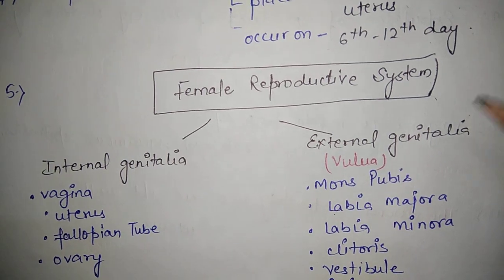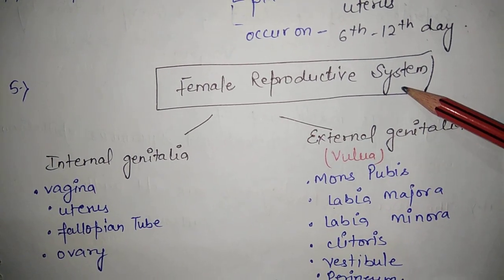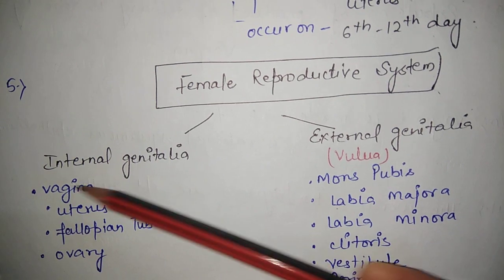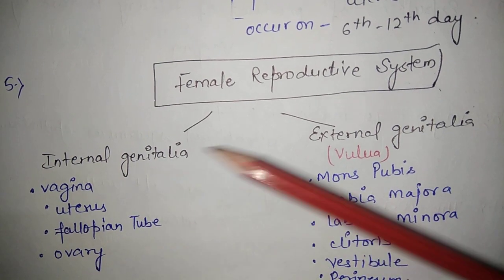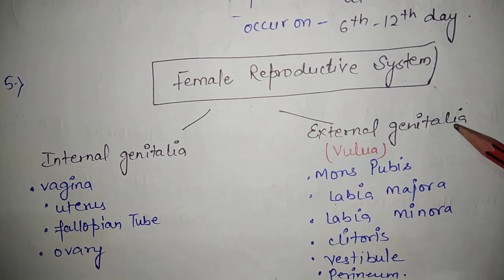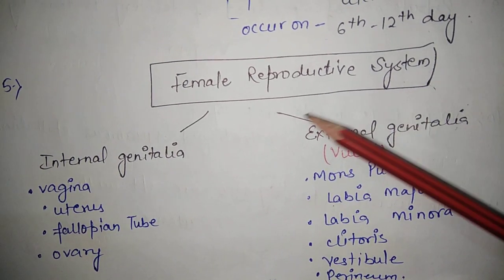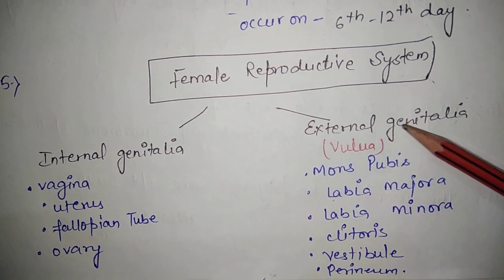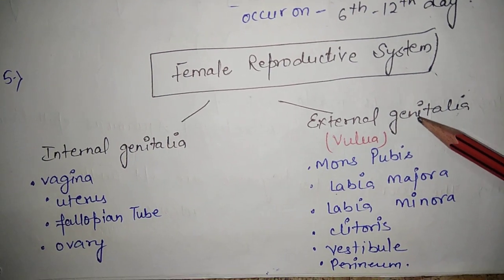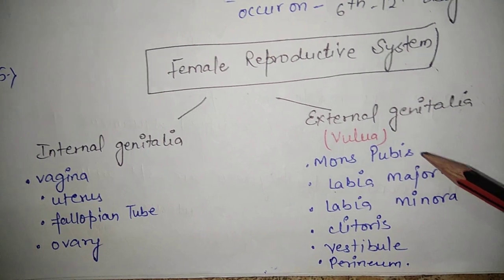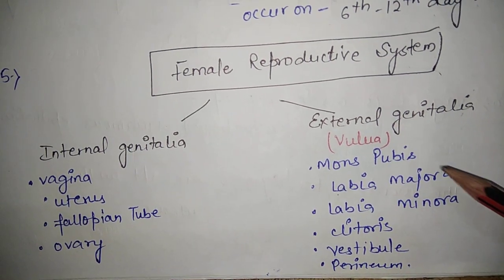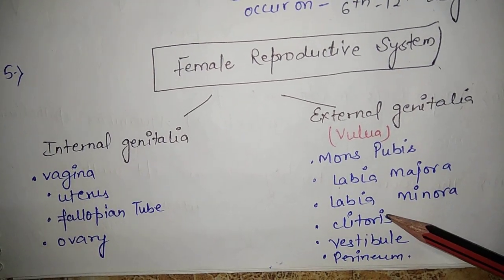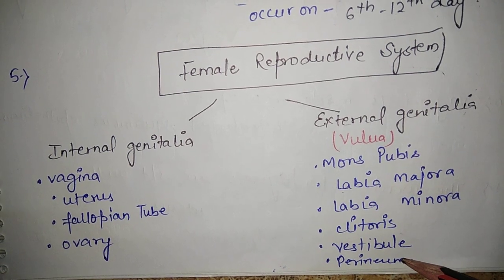The female reproductive system has two parts: internal genital organs and external genital organs. External genital organs are known as vulva, which we can see with the eyes. It includes mons pubis, labia majora, labia minora, clitoris, vestibule, and perineum.